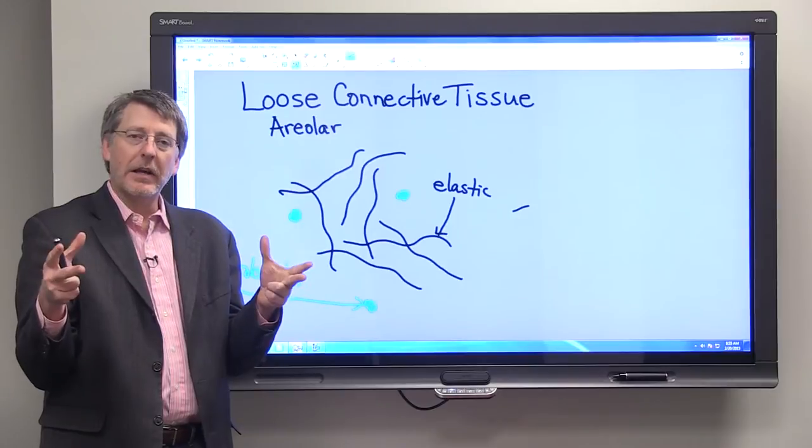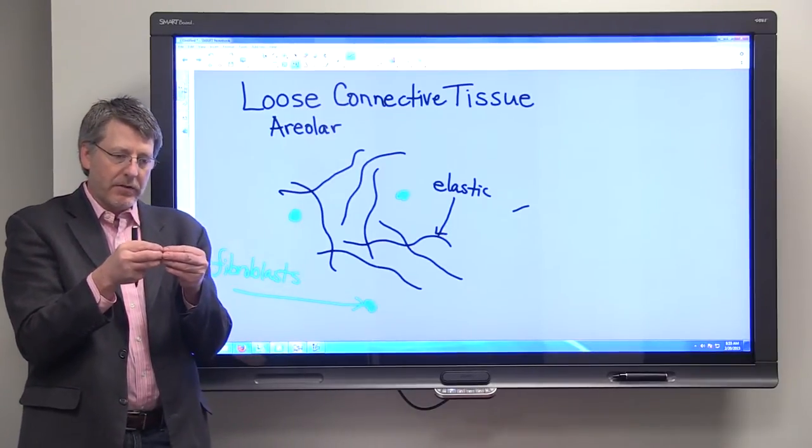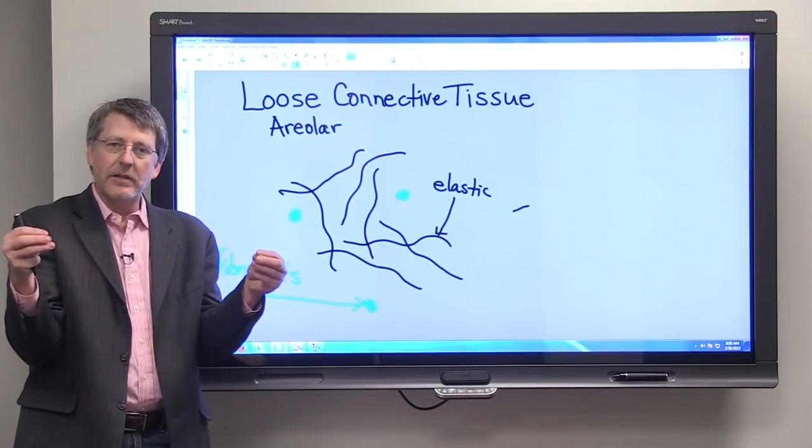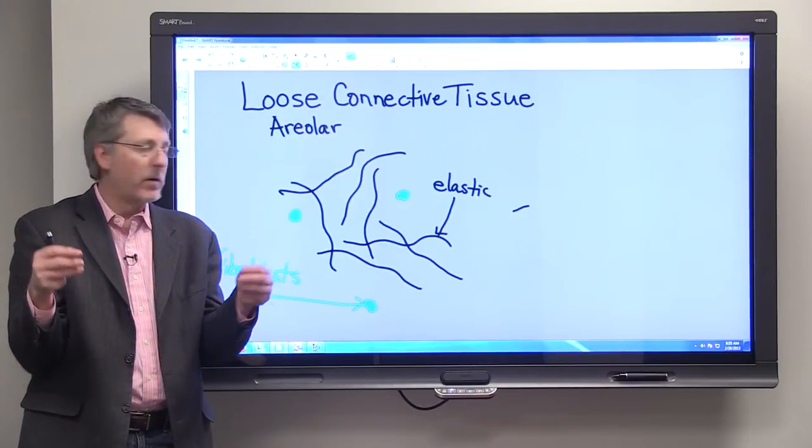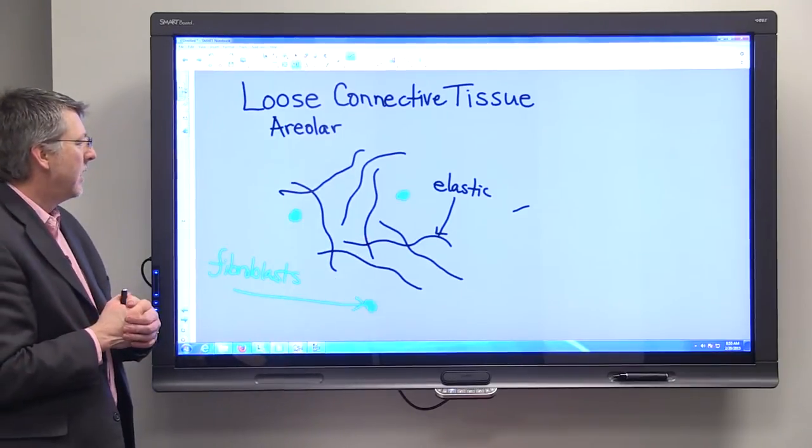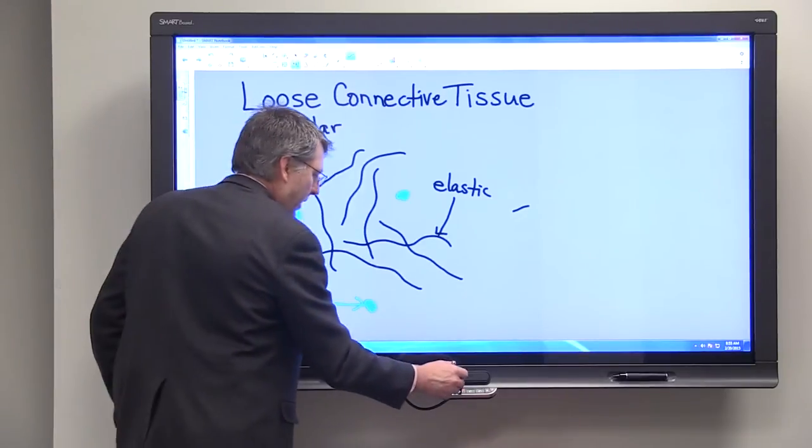There are some things that you can stretch and let go and they won't recoil. For example, if I had a piece of chewing gum and I pulled it out and let it go, it would just stay stretched out, it wouldn't recoil. So elastic fibers recoil and that helps to give this tissue a lot of its important characteristics.